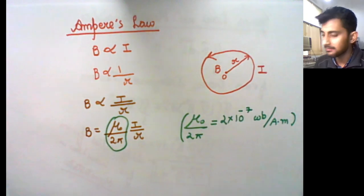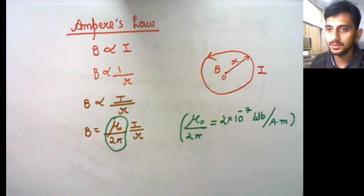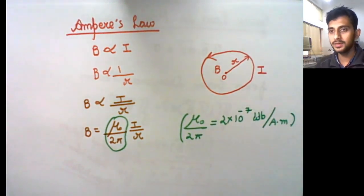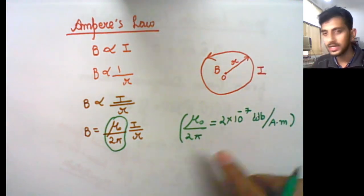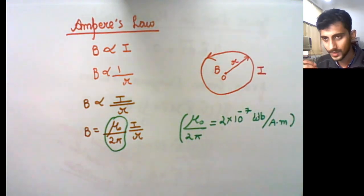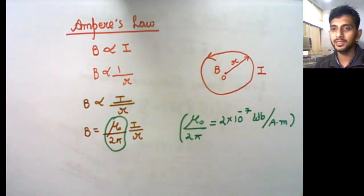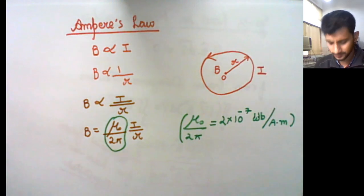This constant mu0 upon 2pi has the value 2 × 10⁻⁷ Weber per Ampere meter. Weber is the unit of magnetic flux, A is current, and M is meter — so the unit is Weber per Ampere meter. Mu0 upon 2pi is just a constant.